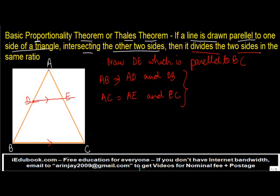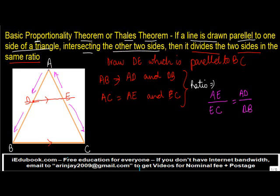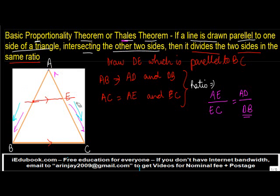If a line is drawn parallel to one side of the triangle intersecting the other two sides, then it divides the two sides in the same ratio. In other words, the ratio of AE to EC should be equal to the ratio of AD to DB. This is what the theorem says — the proportion of the lengths of the two divided segments must be equal.